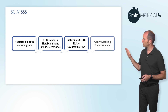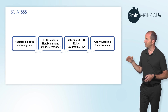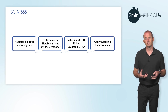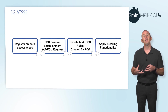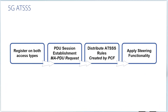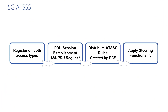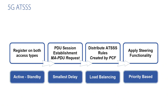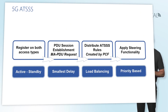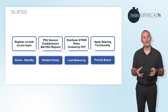Once those rules are actually installed, it allows the device and the UPF to apply what is called steering functionality. That steering functionality will tell the device or the UPF exactly which access network should be used and how.